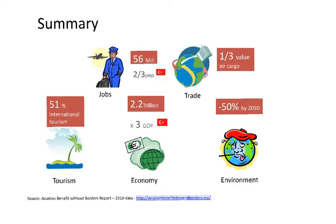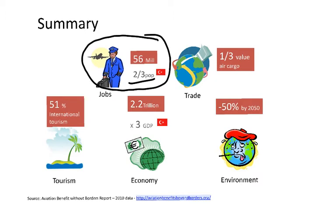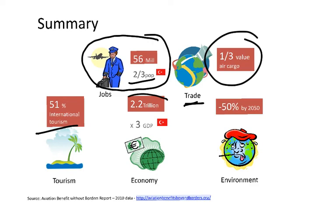As a summary, the aviation industry generates about 50 to 60 million jobs — roughly two-thirds of the population of Turkey, which is 75 to 80 million people. Aviation facilitates trade, and one third of the world's cargo is transported by air. Aviation is also very important for tourists, as more than 50% of international tourists travel by air. Aviation has a very important contribution to the economy, up to three times the GDP of Turkey in global impact. But aviation can also have negative impacts on the environment, and that's why there are measures to reduce the impact by 50% by 2050.